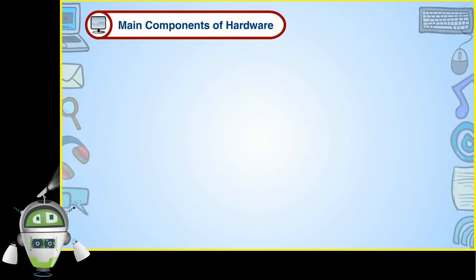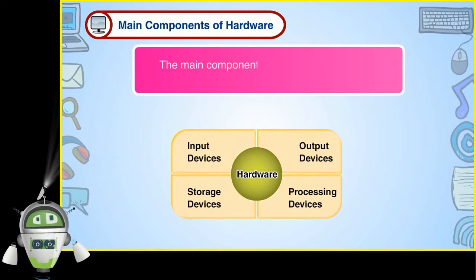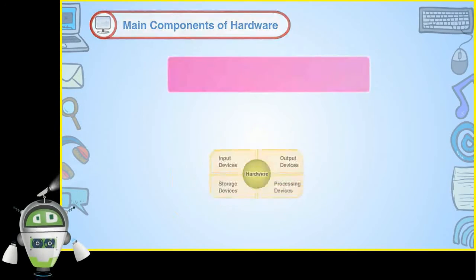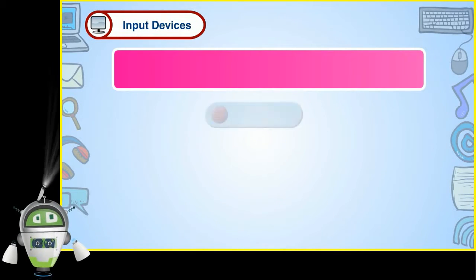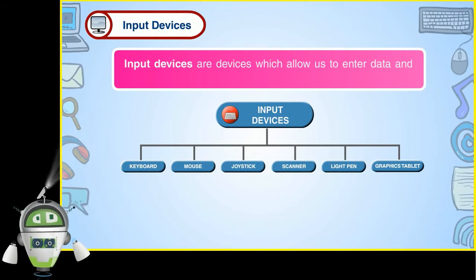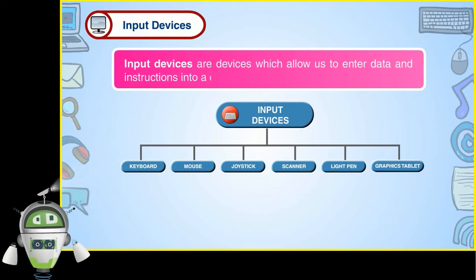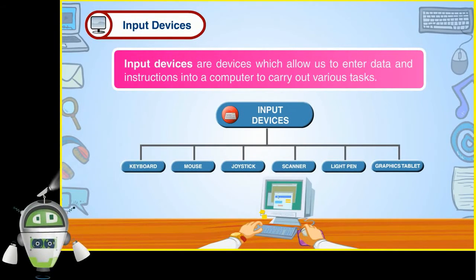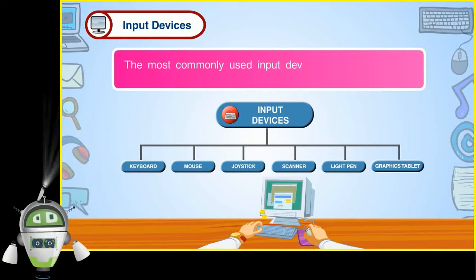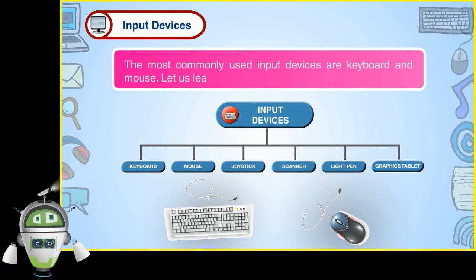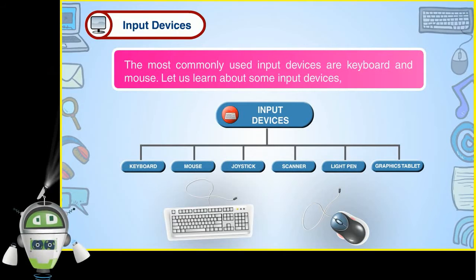Main components of hardware: The main components of hardware are as follows. Let us learn about them. Input devices are devices which allow us to enter data and instructions into a computer to carry out various tasks. The most commonly used input devices are keyboard and mouse. Let us learn about some input devices in brief.